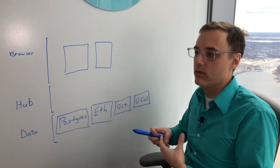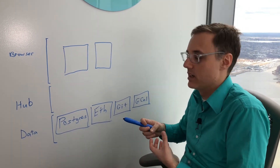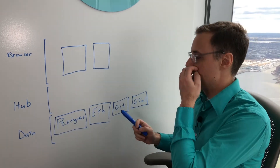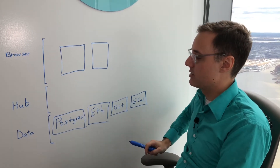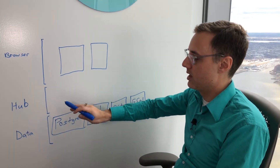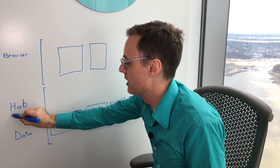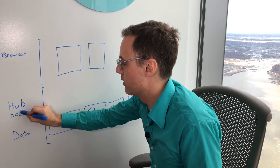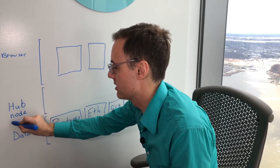As the owner of your data, you really have to be the one running your own personal search engine. And that's kind of what the hub tier is designed to be — this idea that you can index all the content out of all your data sources into the hub. Our hub tier is a Node.js based server.